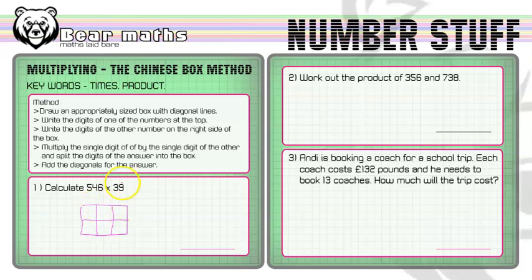Now the diagonal lines - one's going to go through each of the squares here. That one goes through there, that one goes through there. I am drawing it outside the grid on purpose because our answer is going to appear in this space here. Five, four, six. I'm writing the digits of one of the numbers at the top. I'm doing the one that's bigger on top. Write the digits of the other number on the right-hand side of the box. I'm going to do three and nine.